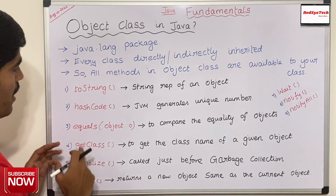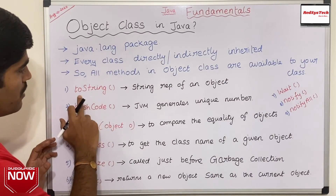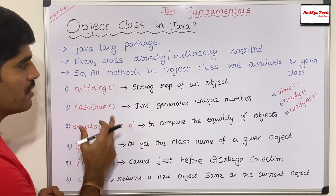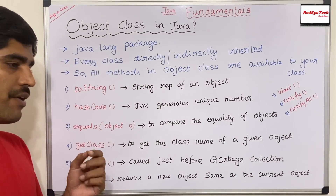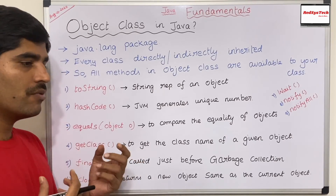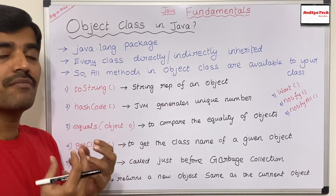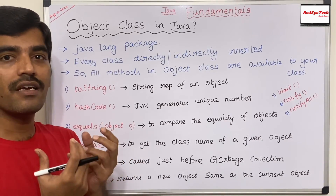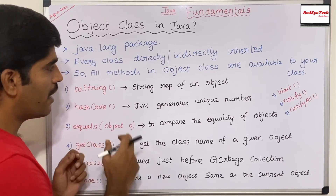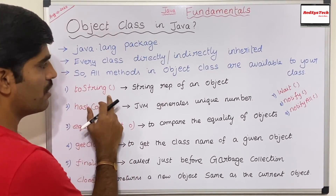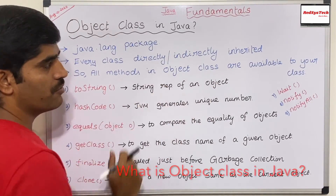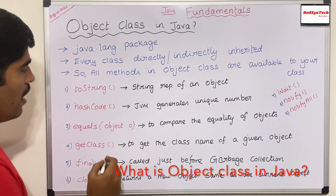The first method is toString. Let's say I have created an object of a class and I want to see the real-time string representation of that object. For that, I can call the toString method, which returns the string representation of an object.